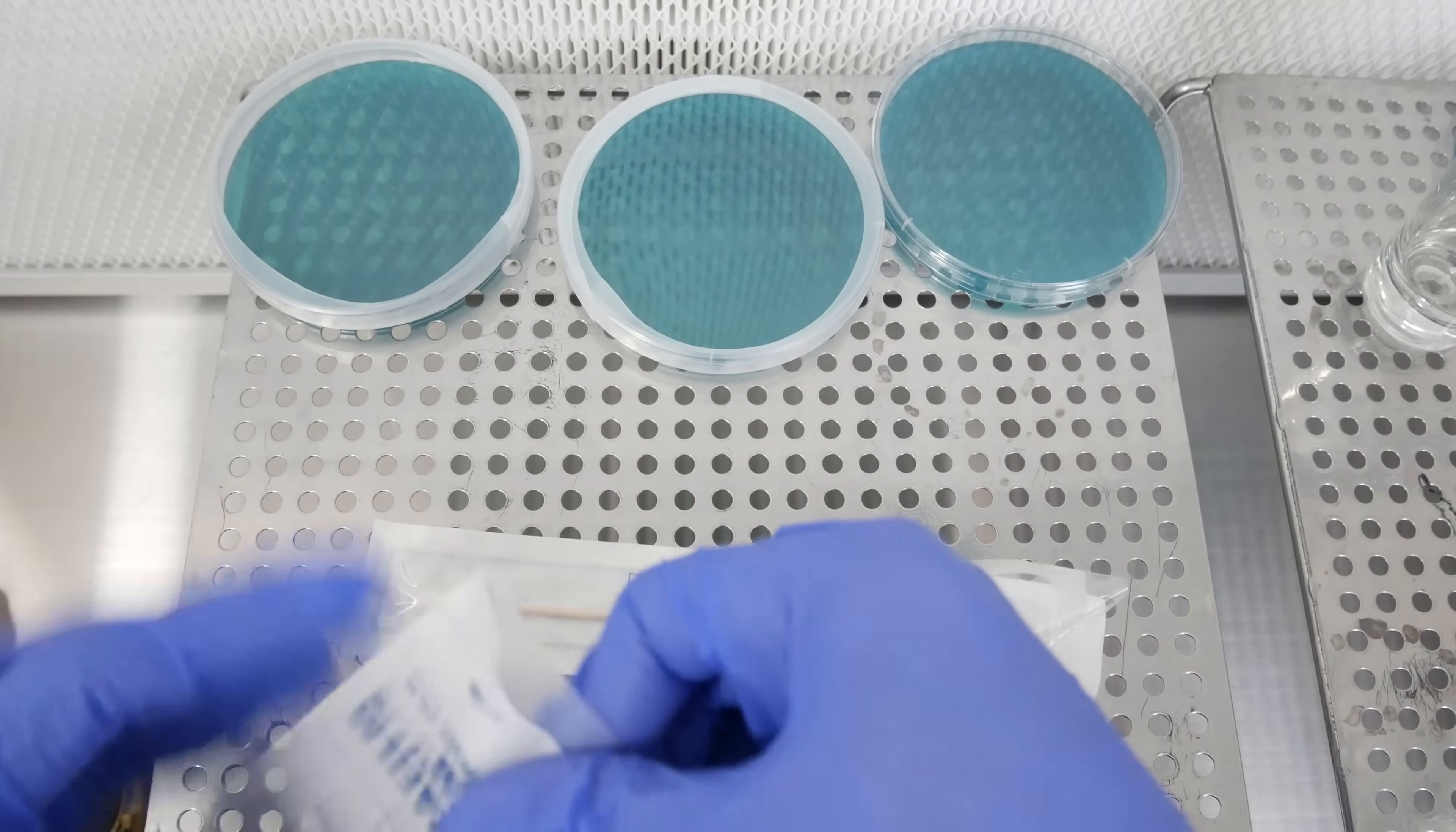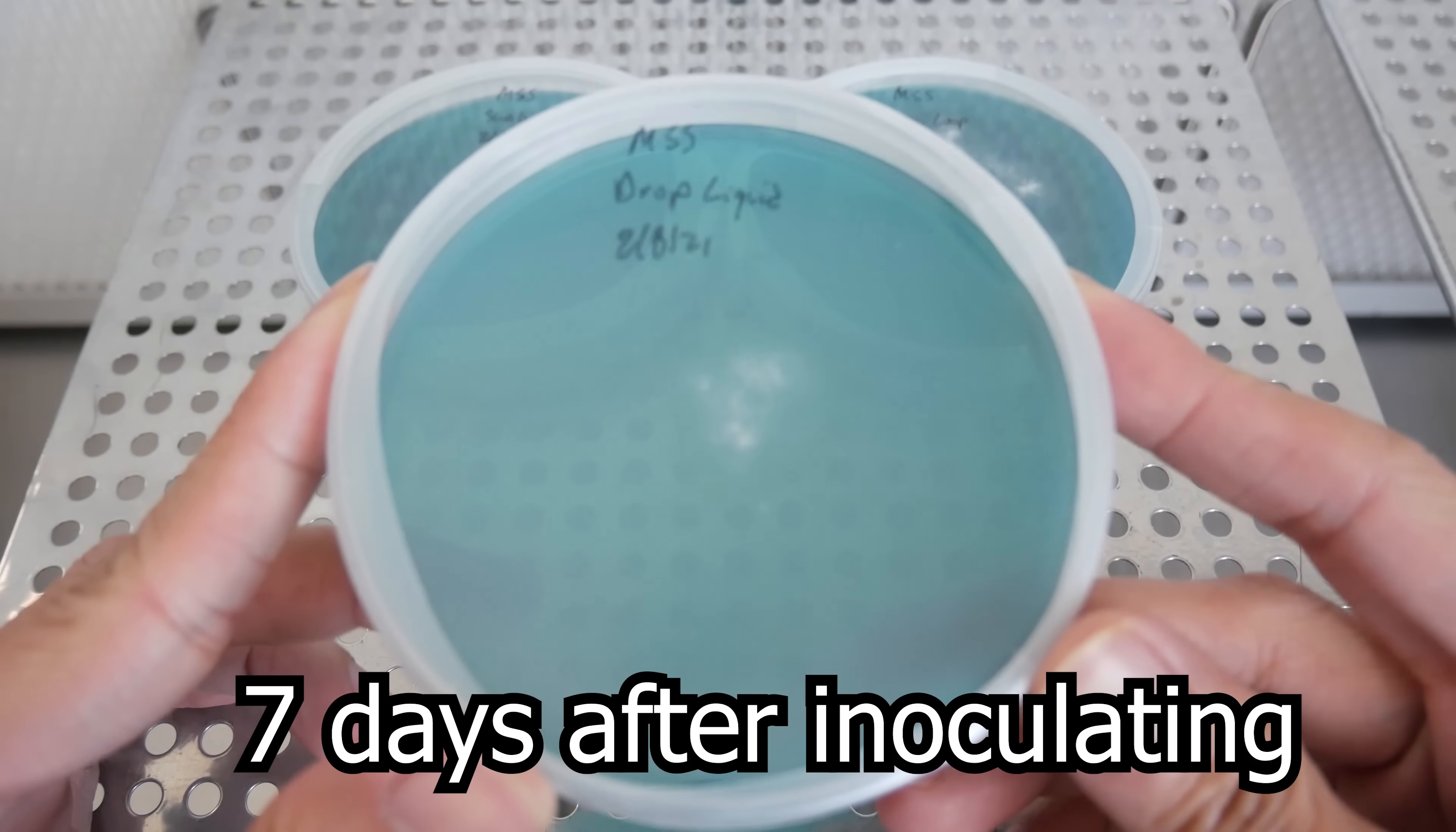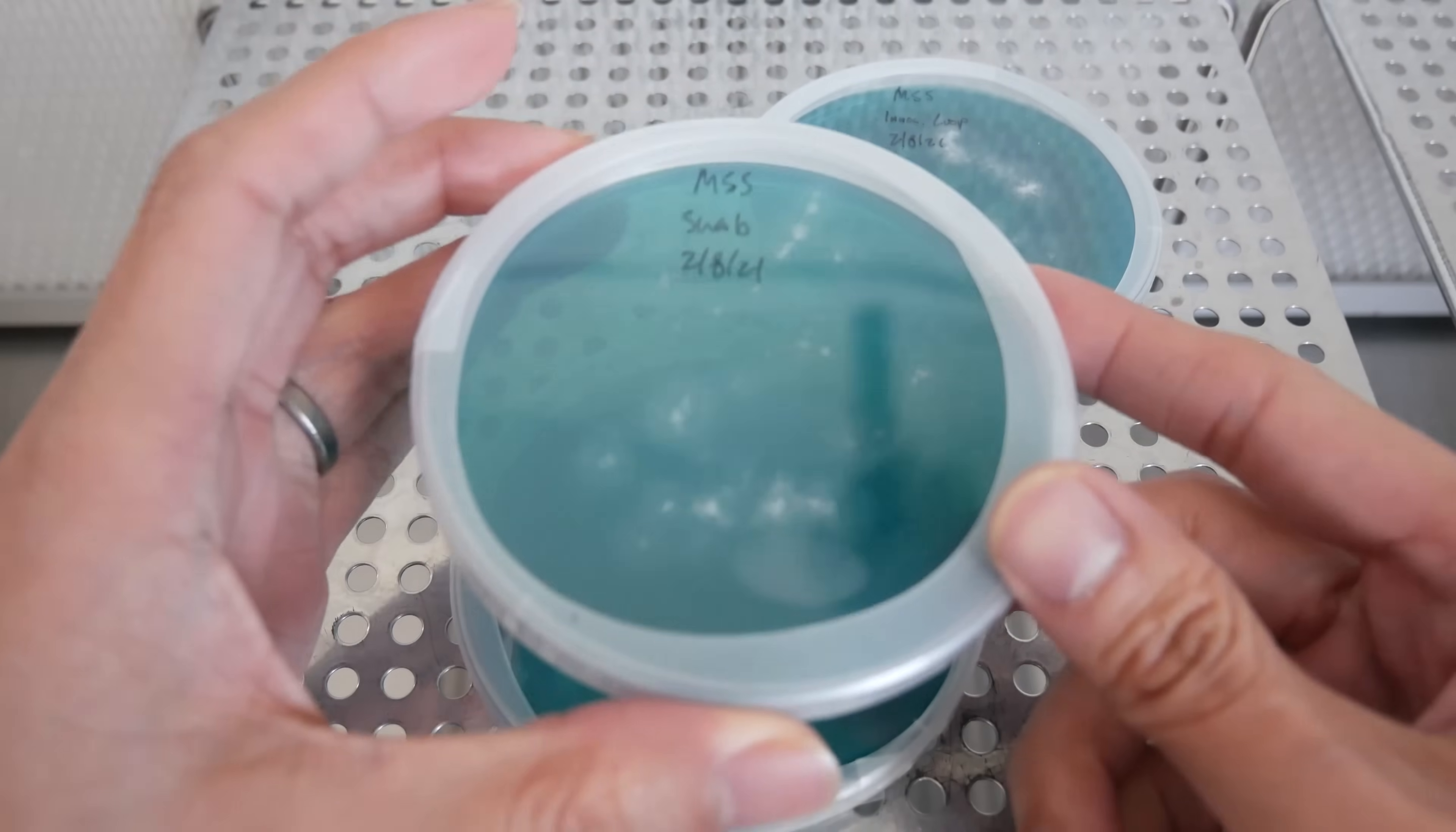Here we are one week later, and this is what your plates may end up looking like if you have successful germination. Here's the plate that has the two drops of spore solution directly in the middle here. When you start seeing that white fuzz appear, that means your spores have successfully germinated. Congratulations, you are now a proud parent of mycelium culture.